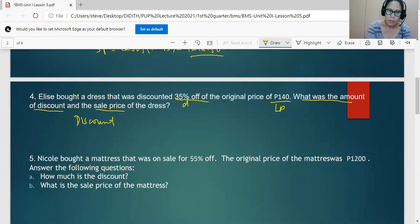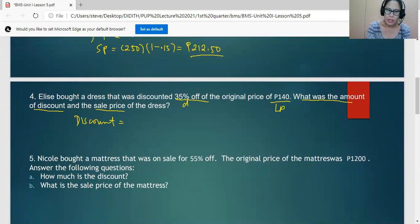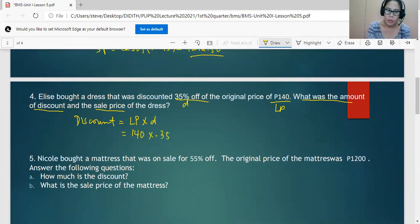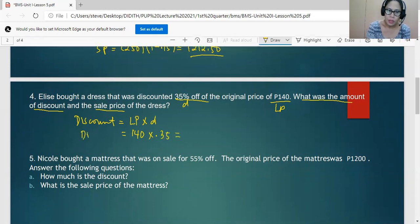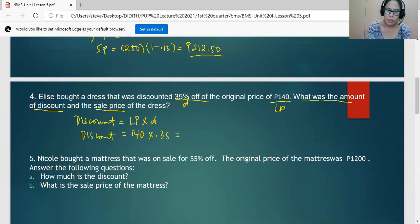We need to work on the discount. The discount can be solved by multiplying the list price by the discount rate. So this is 140 times 0.35, so the discount is 49. Now we will just subtract this 49 from the list price to obtain the selling price. Since we are required here to provide the discount, we can just work on the difference.